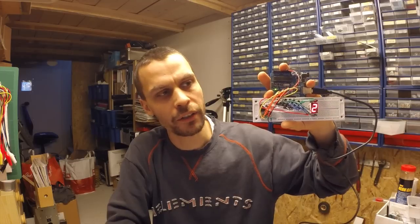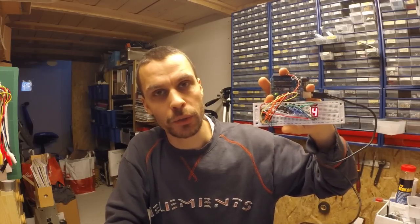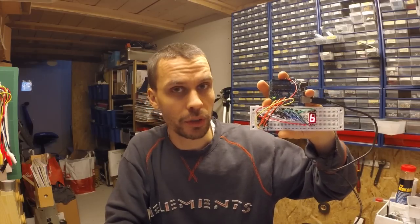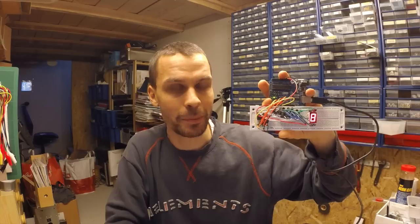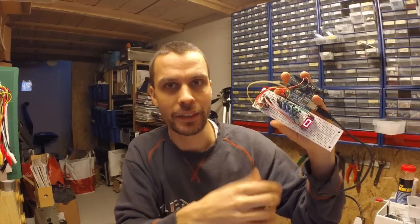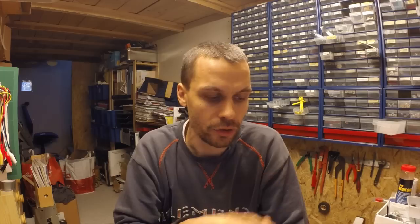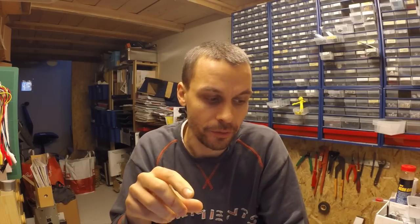So we're going to build this circuit right here. And because I use a common anode seven segment LED display, it looks like this. If I had a common cathode it would have been much easier. I'll show you the difference and let's get right down to do that.